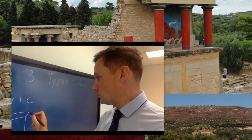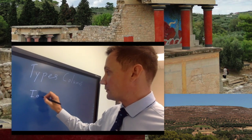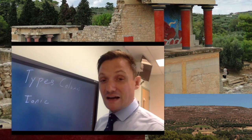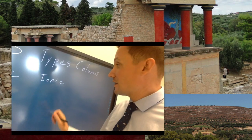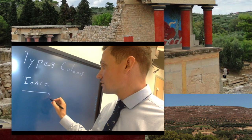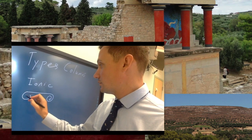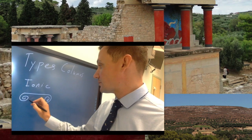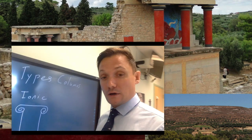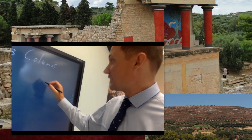And then you have an Ionic column, referencing of course the area of Ionia. As things progress, an Ionic column looks kind of like this — reminds me of Hercules every time I see it, the Disney movie. An Ionic column has these little swirly guys on the top.